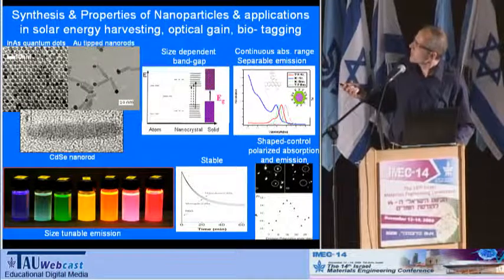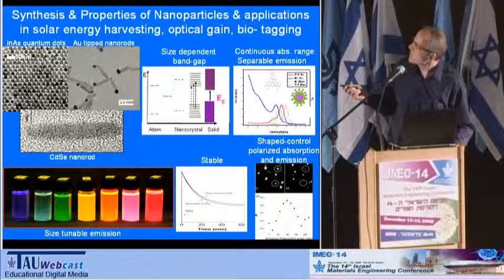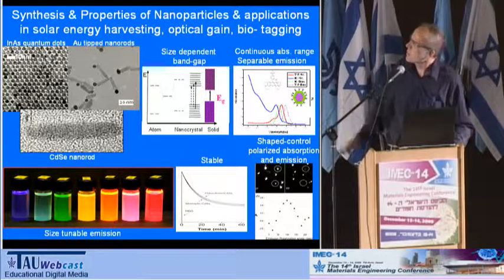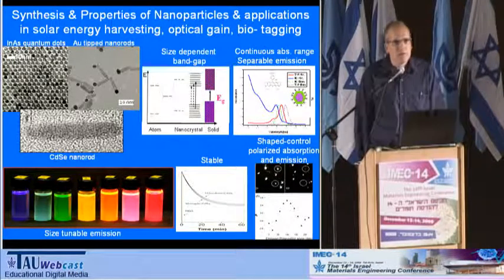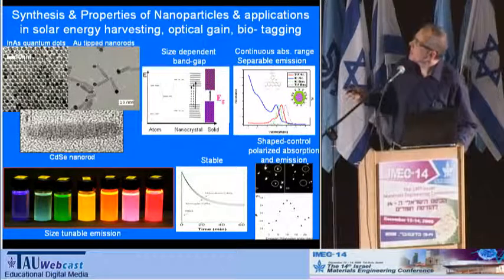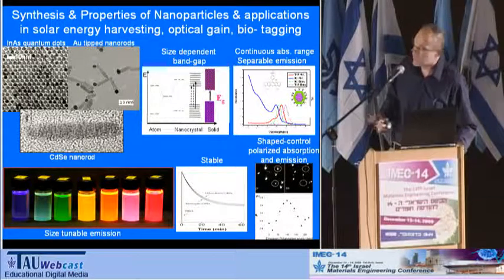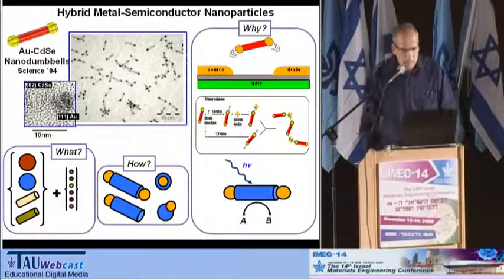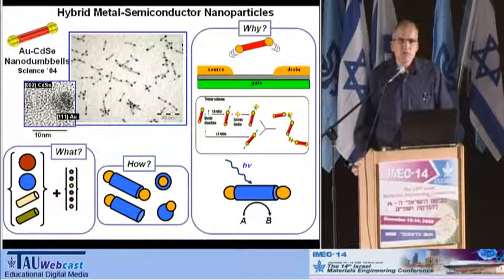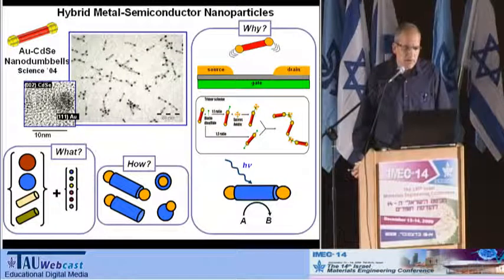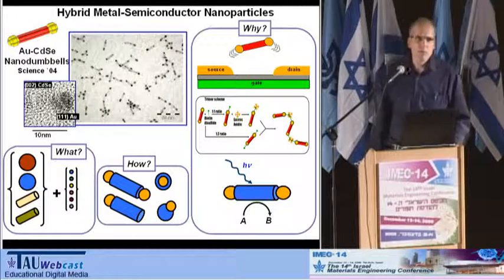Shape control is another very interesting aspect because it introduces the opportunity to study the evolution from a zero-dimensional quantum dot to a 1D nanowire. The focus of the talk today will be the ability to combine different disparate materials on the same nanostructure, forming, for example, gold-tipped cadmium sulfide nanorods as seen here. The particular focus is on the combination of metals and semiconductors, starting from our work a few years ago.